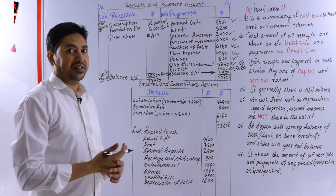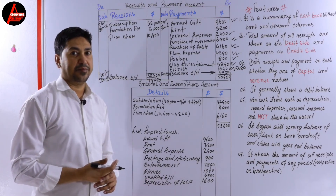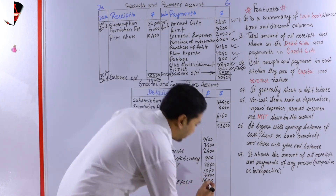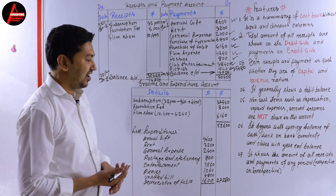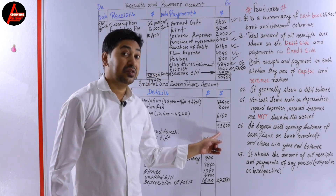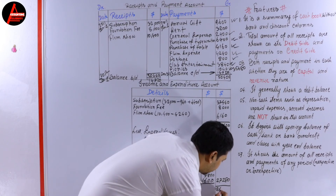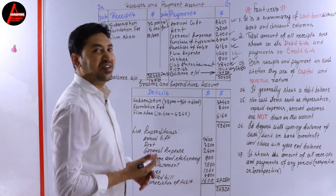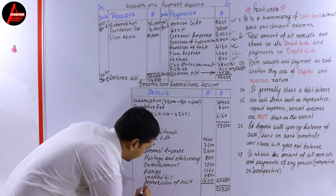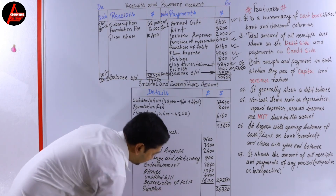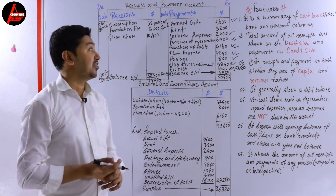We have finished writing all items and all adjustments. Now we calculate to find the surplus or deficit. If you add all expenditures the answer is twenty-seven thousand two hundred eighty dollars. Subtract this from the total incomes of fifty-one thousand six hundred dollars and the answer is twenty-four thousand three hundred twenty dollars. This value is called the surplus - surplus is also called excess of income over expenditure.